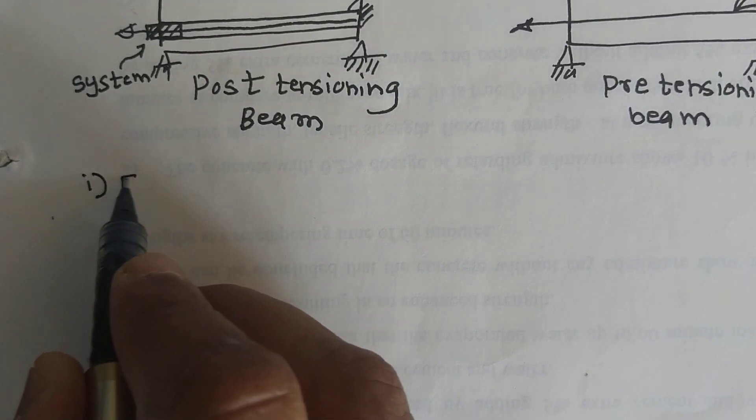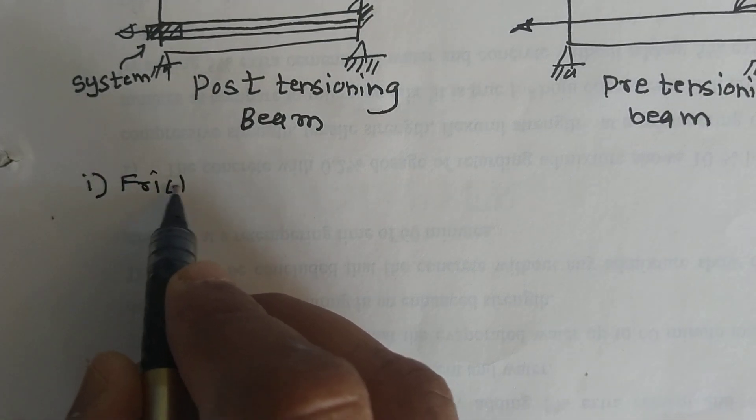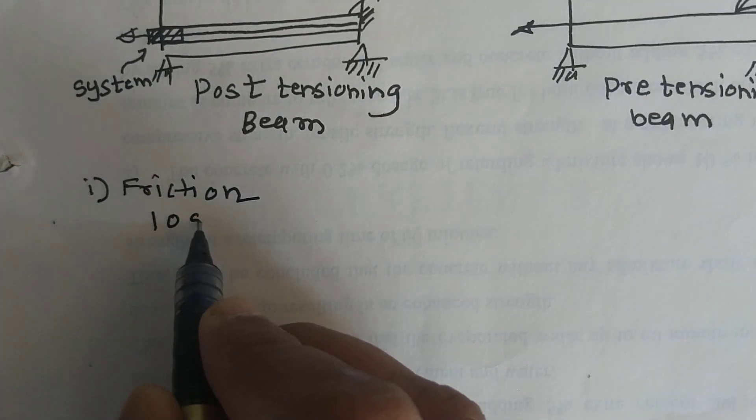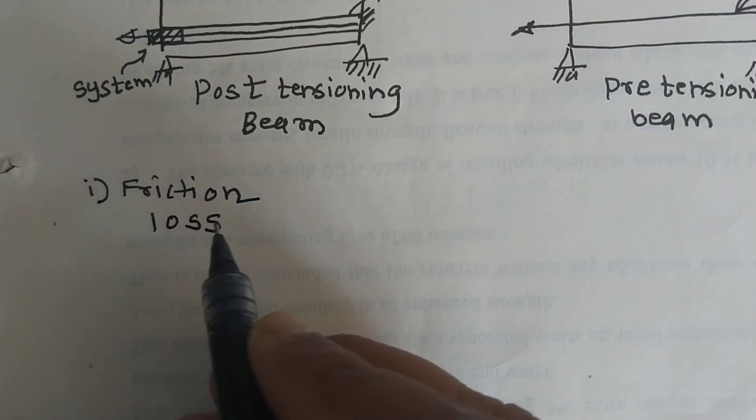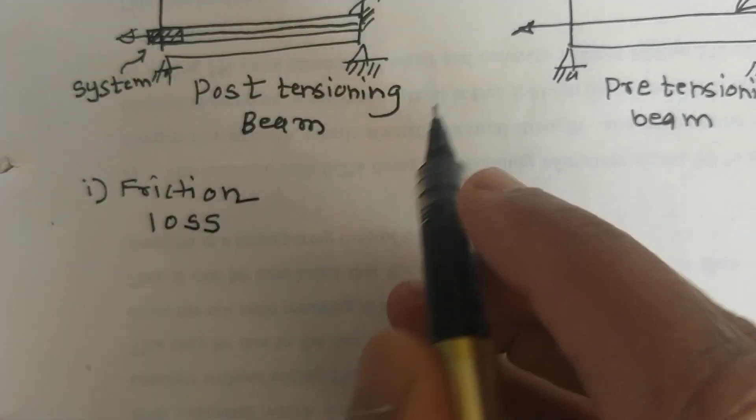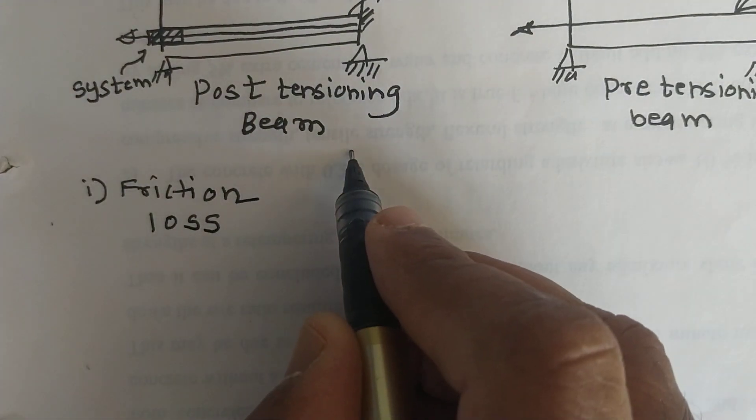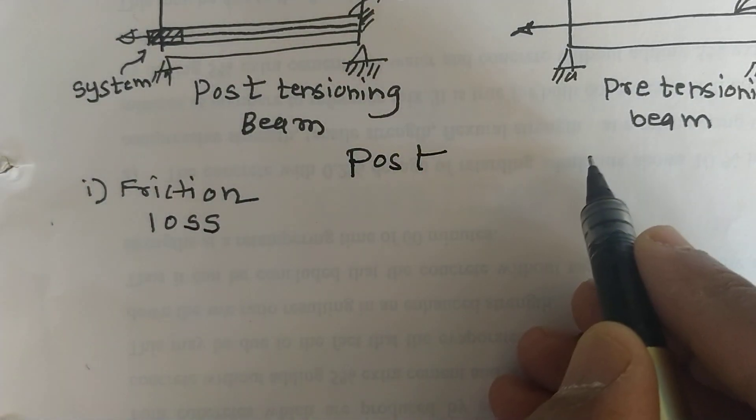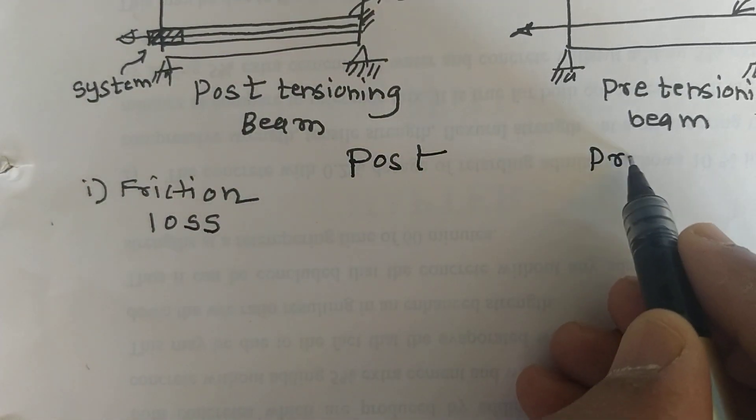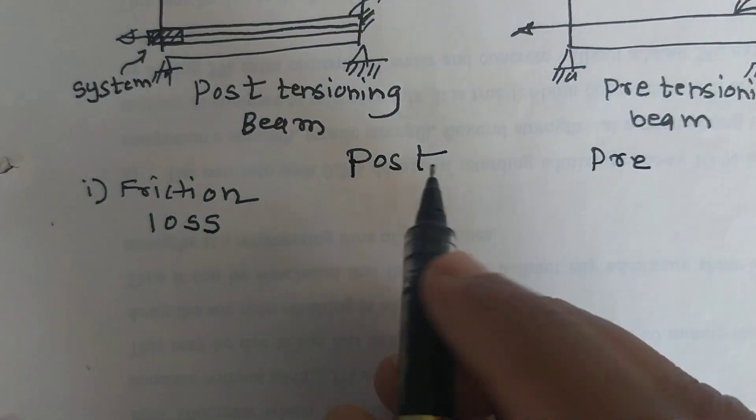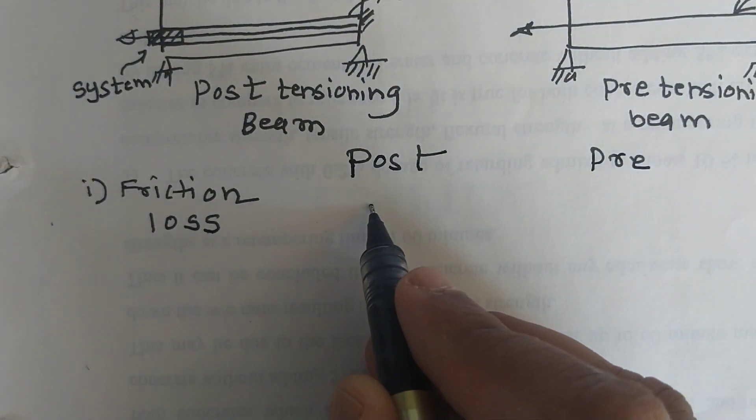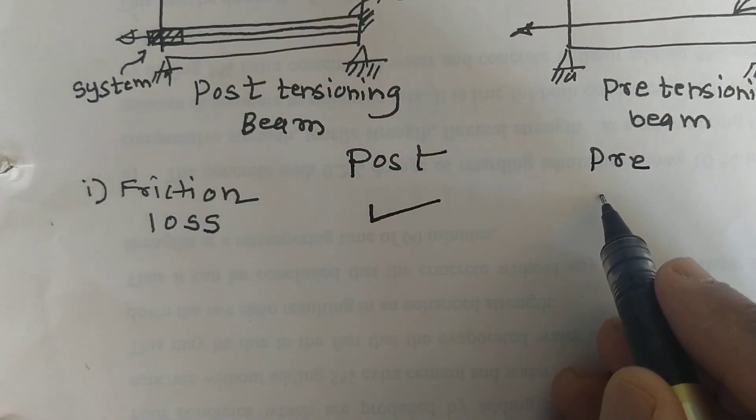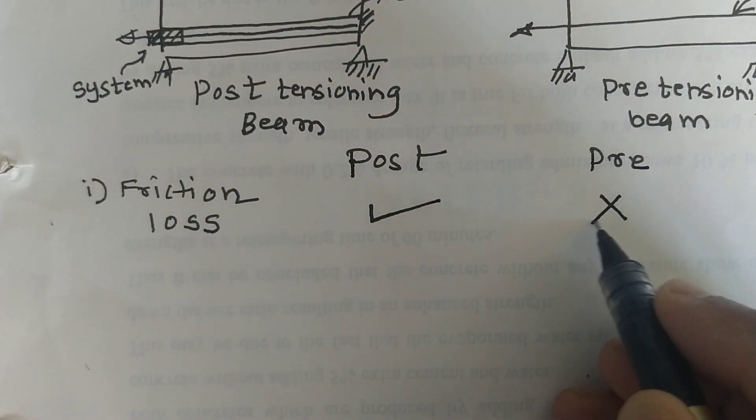First one is the friction loss. So in post-tensioning, friction loss is developed. In pre-tensioning, friction loss is absent.